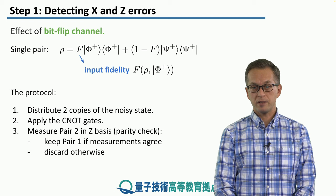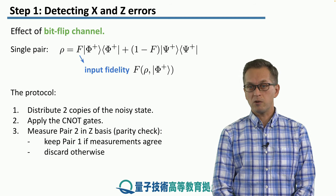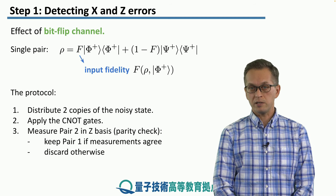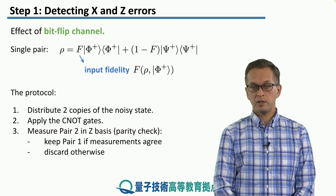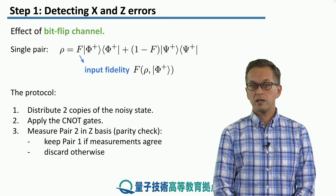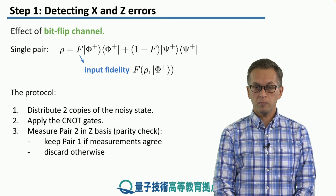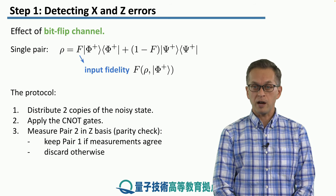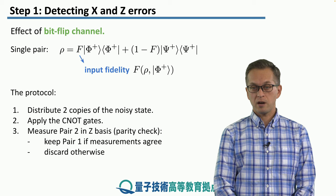And then we measure in the Z basis. And if the measurements are correlated, meaning the parity is even, we keep the pair one state. Or in the other case, if the parity is odd, meaning that the measurement outcomes are anti-correlated, then we discard the first pair.